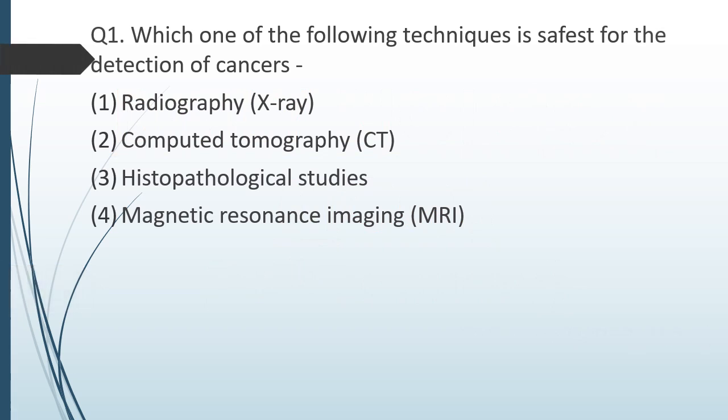Question number one: which one of the following techniques is safest for detection of cancer? Radiography, Computer Tomography, Histopathological Studies, Magnetic Resonance Imaging. The correct answer is option four, Magnetic Resonance Imaging. In Radiography and Computer Tomography, radiations are used. Histopathological study is an invasive study in which you need to take a biopsy of the tissue. Magnetic Resonance Imaging involves neither invasion nor radiation, so that's the safest method.